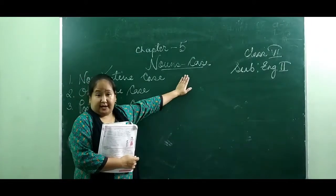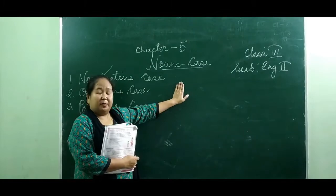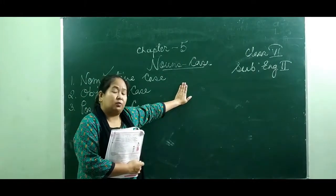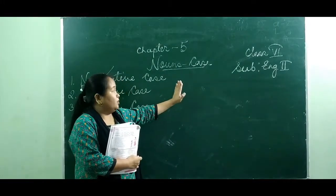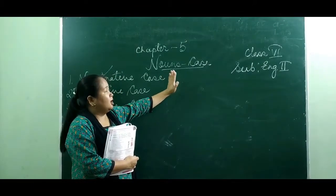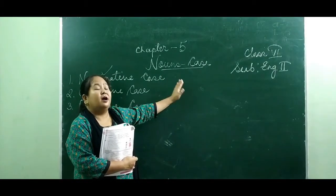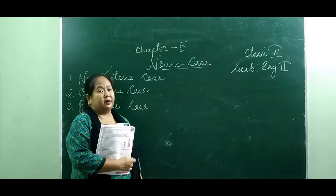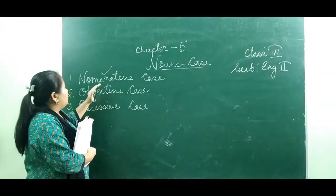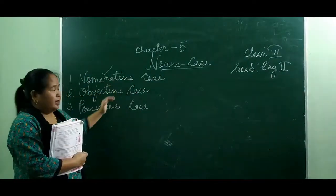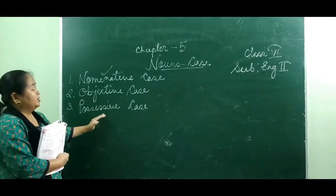So what is a case? A noun may be used as a subject or object of a verb, or in apposition. So we say that the noun is in the nominative, objective, or possessive case respectively. Now we will learn in detail: what is nominative case, what is objective case, and what is possessive case.